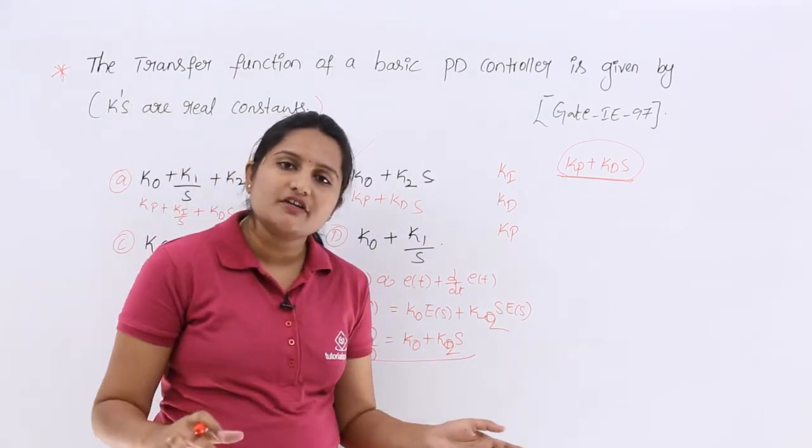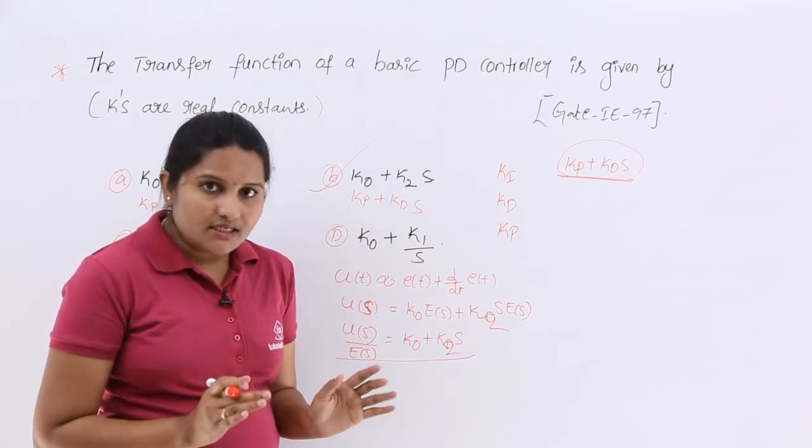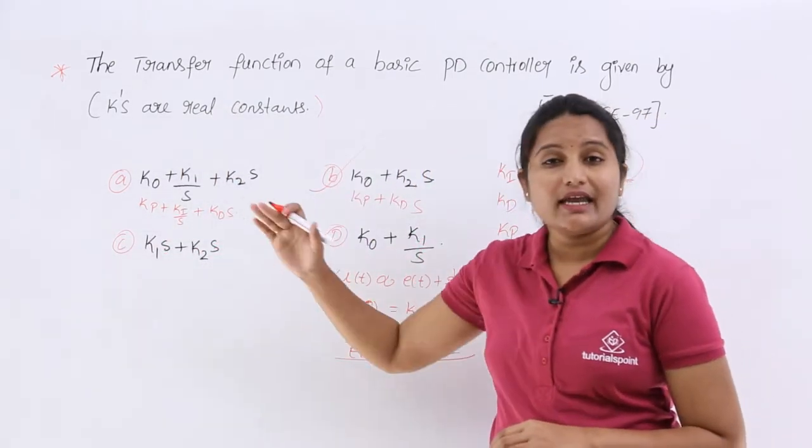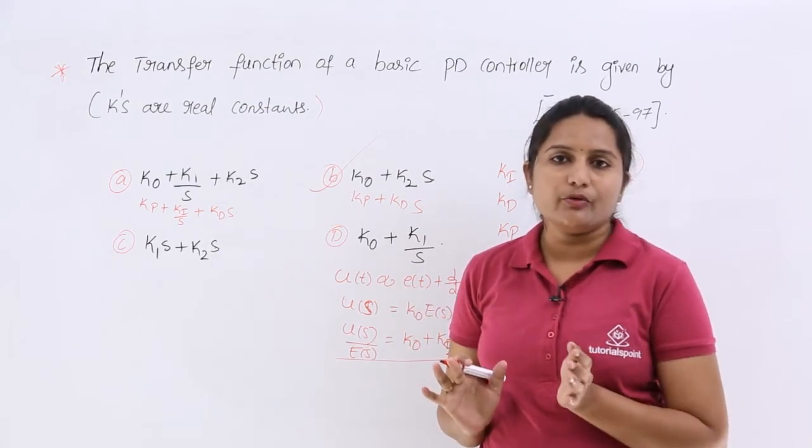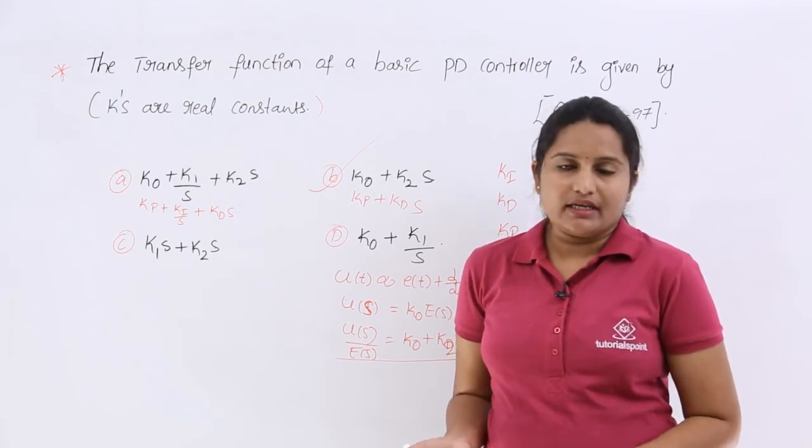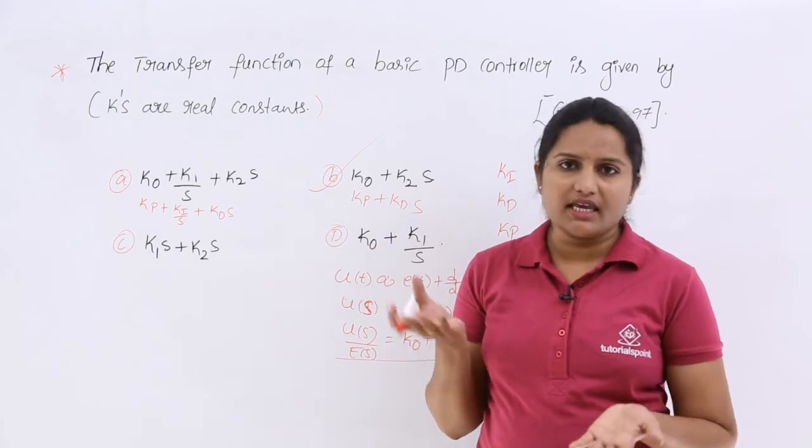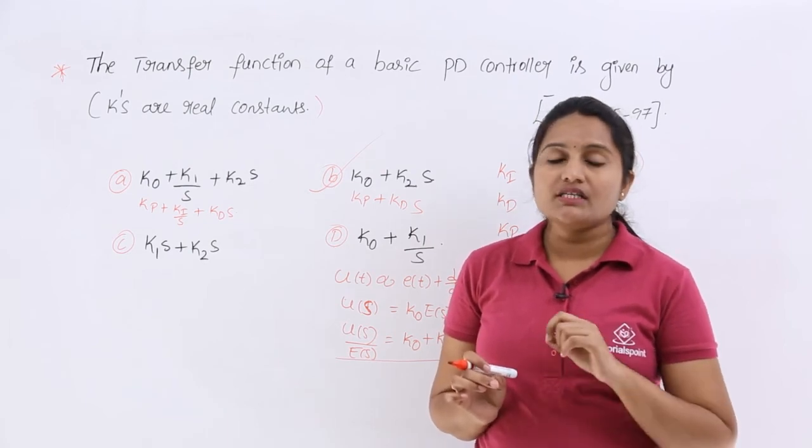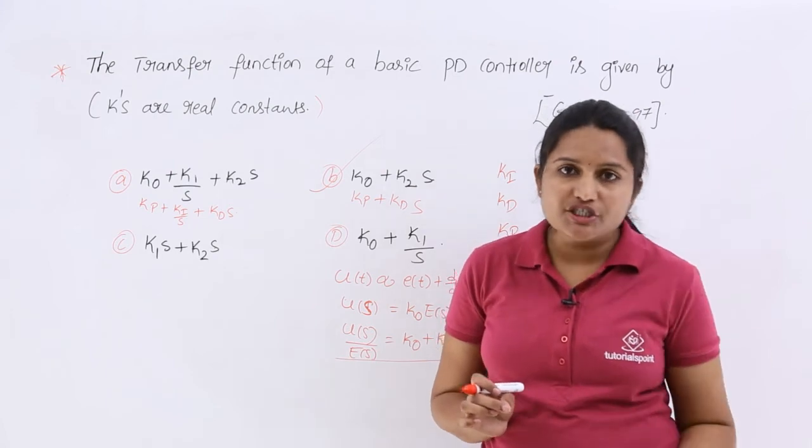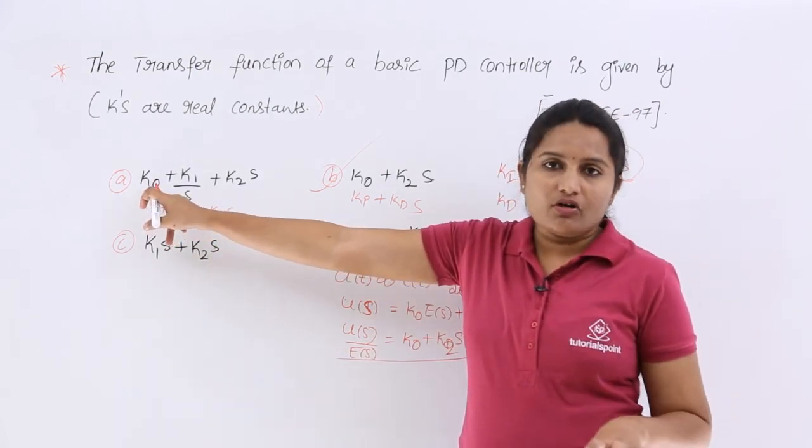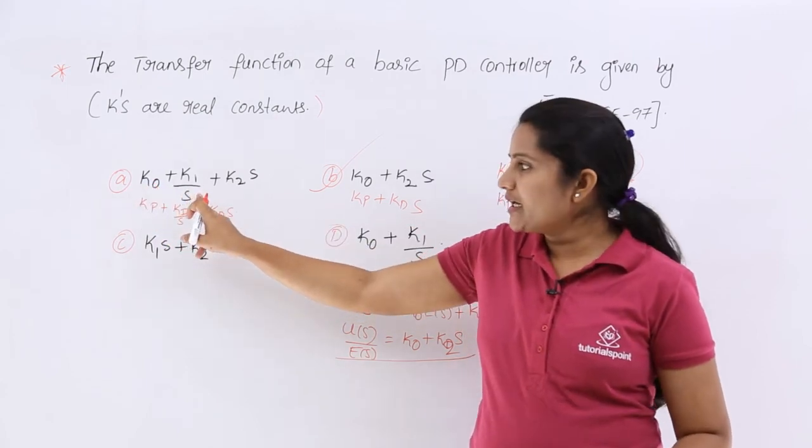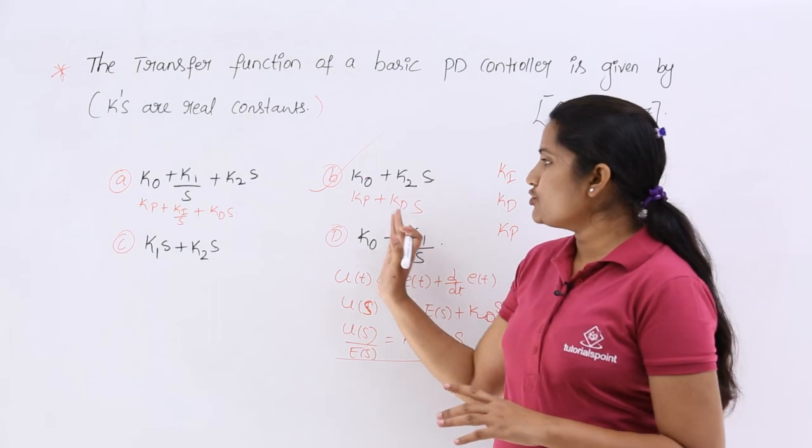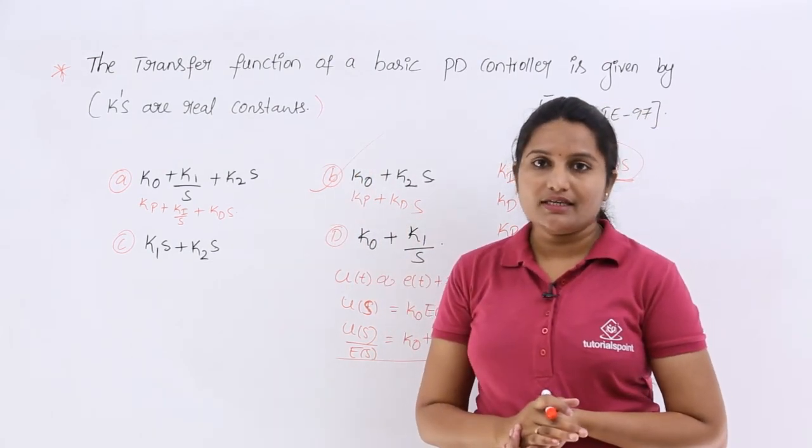We already have all the videos related to all controllers. But in this problem, why I given this problem means in exams, they may give with any name. They may change the coefficient name, proportionality, constant names. They can give it as K1, K2, Kp, Ki, Kg, Km like that also. But how you can identify which one is related to proportional, which one is related to integral, which one is related to differential? If this is individual constant, that is proportional related. Divided by S means that is related to integral. Into S means that is related to differential. Like this way, we need to trace. And for this problem, the right option is option B.